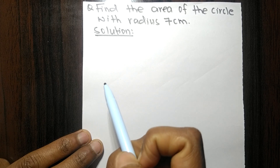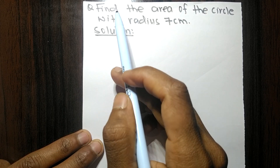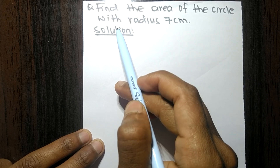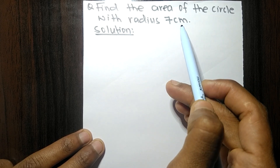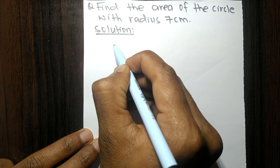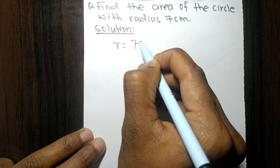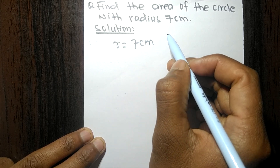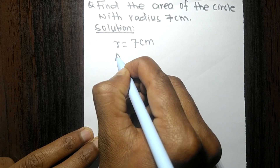Today in this video we have to find the area of a circle with a radius of 7 centimeters. The radius is given as 7 centimeters, and we have to find out the area of a circle.